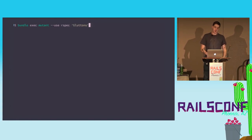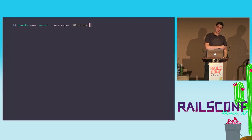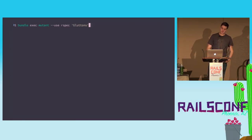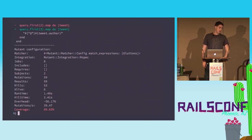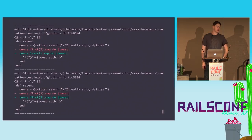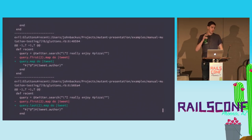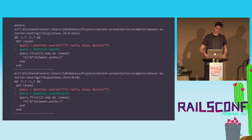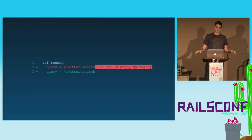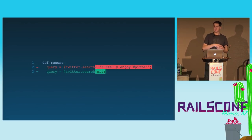In this example I'm invoking the Mutant command line program and passing a flag to use the RSpec integration, and telling it to mutate the class we just saw. There's going to be a lot of noise in this output — we'll go over all the results again. Each diff here is a mutation that it found while running my tests.